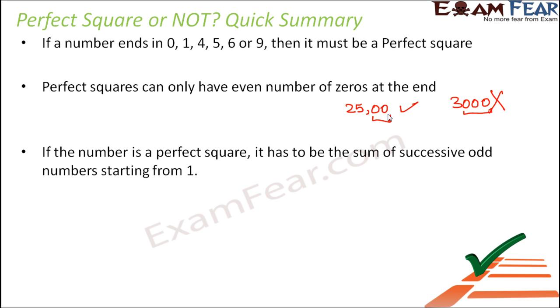If a number is a perfect square, it has to be the sum of successive odd numbers starting from 1. Any number which is a perfect square has to be the sum of first n odd numbers. That is why we say that the sum of first n odd numbers is n square.